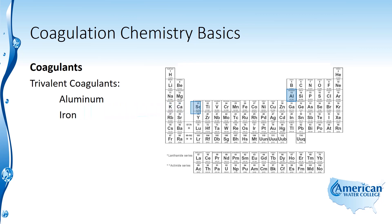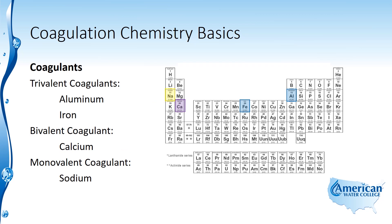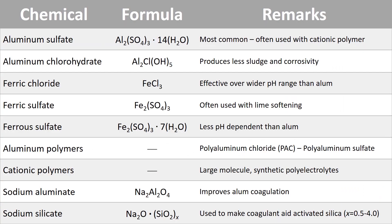Iron is also a trivalent coagulant. So you have aluminum salts — aluminum sulfate — as a coagulant, and you also have several iron salt coagulants: ferric chloride, ferrous sulfate, and ferric sulfate. Aluminum and iron are trivalent. An example of a bivalent coagulant would be calcium hydroxide, and a monovalent coagulant would be sodium silicate.